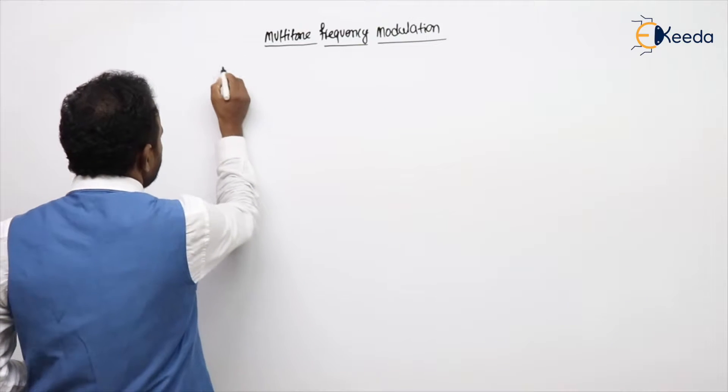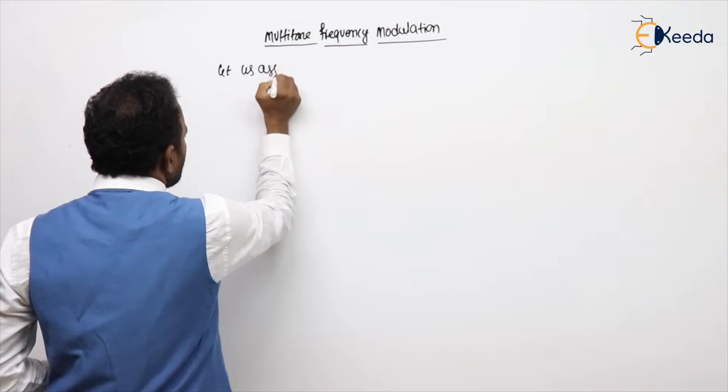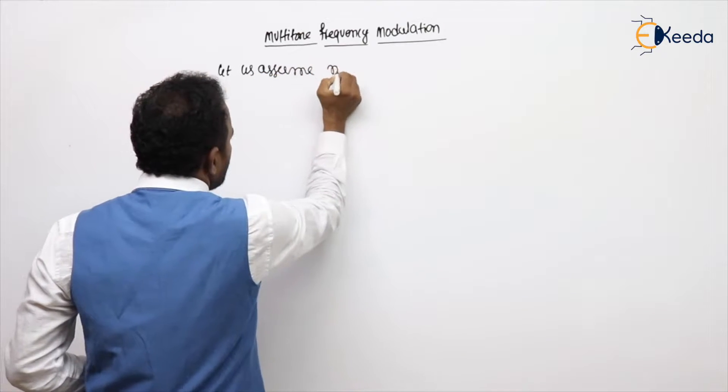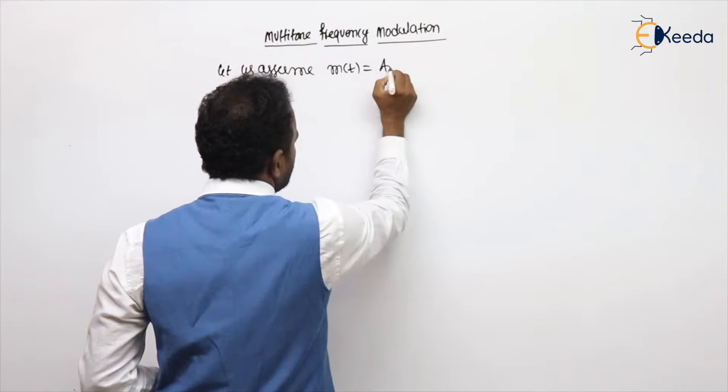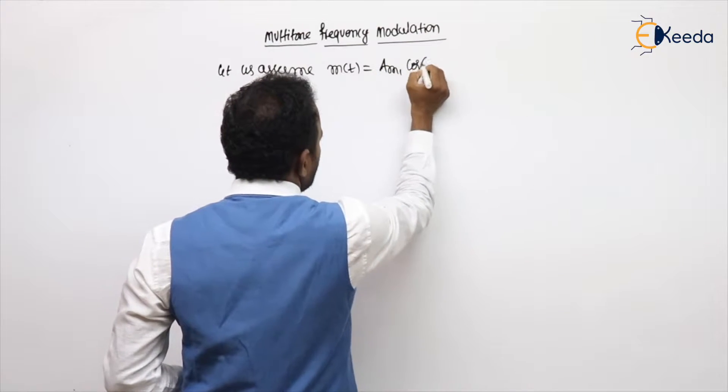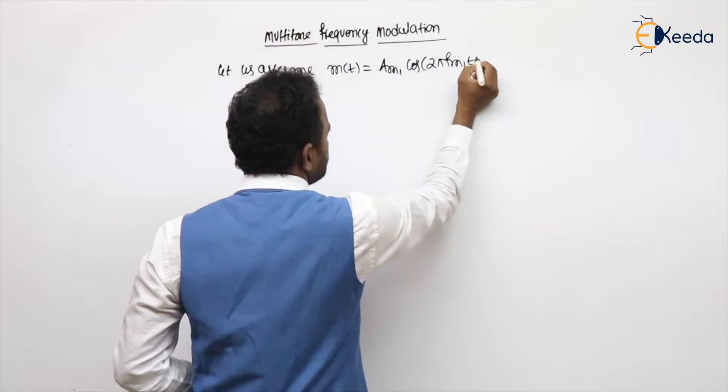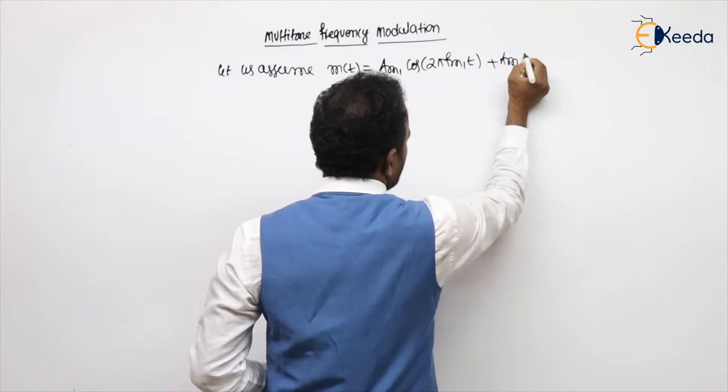Let us assume m of t is having multiple frequency components like Am1 cos 2π fm1 t plus Am2 cos 2π fm2 t.